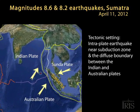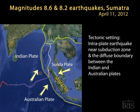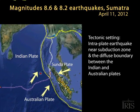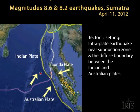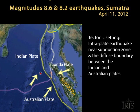Let's look at the tectonic setting. The Indian and Australian oceanic plates are diving beneath the Sunda Plate. The area between the two oceanic plates is a zone of broad deformation.